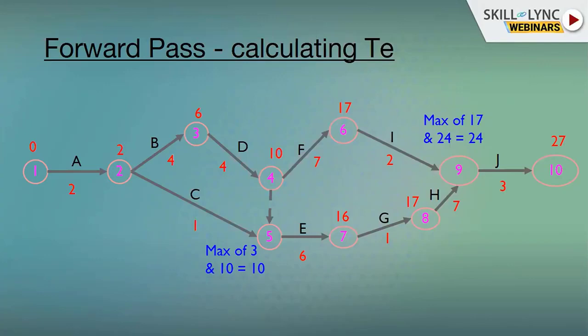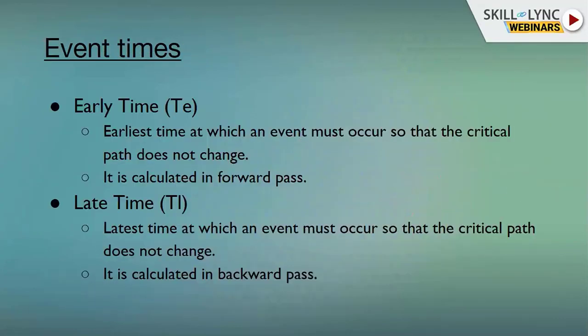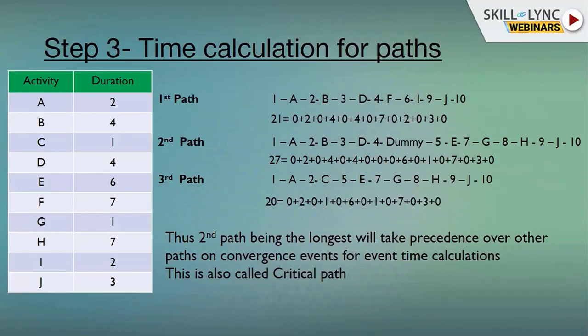Moving on, a similar case can be seen at event nine where from path number one we are getting a timeline of seven days and from path number two we are getting a timeline of 24 days, so we'll be taking the maximum — that is 24 days. We can see event ten has a TE of 27, which is equivalent to our duration of the second path, which was the longest path.